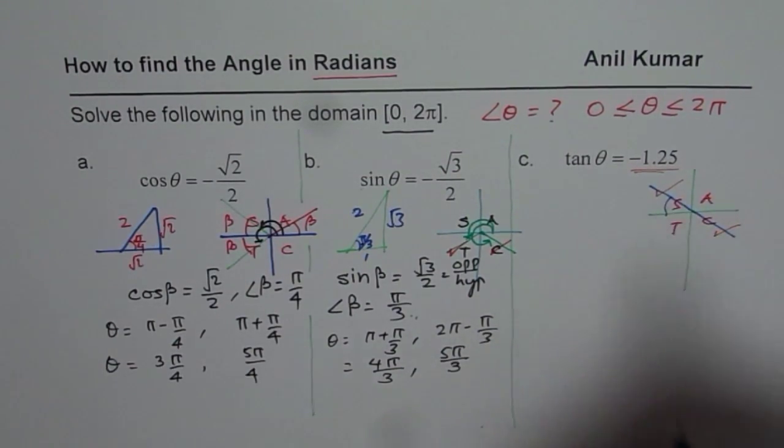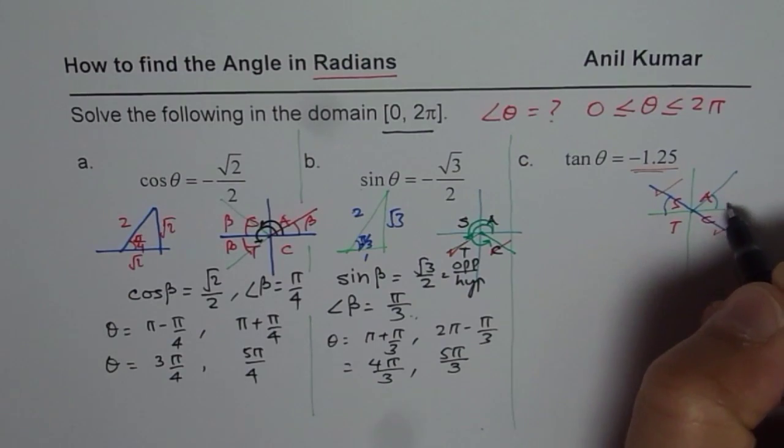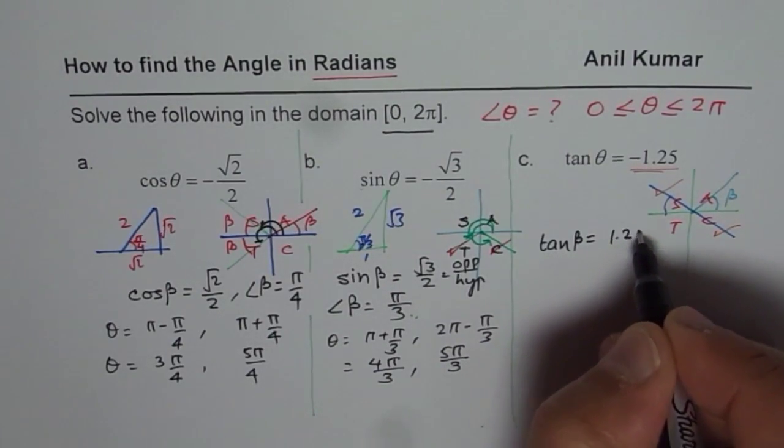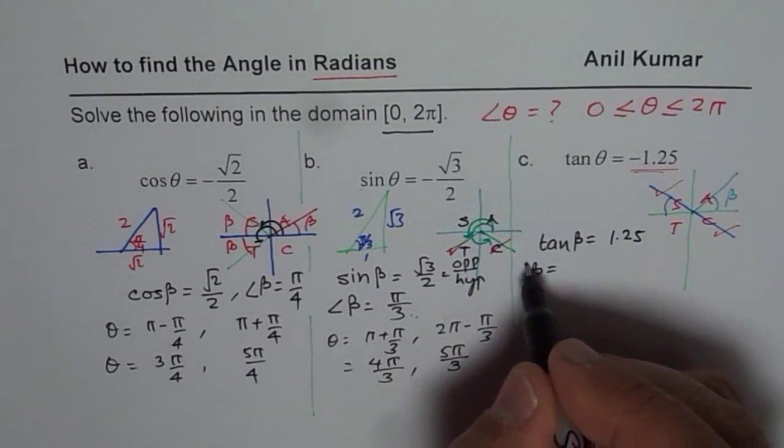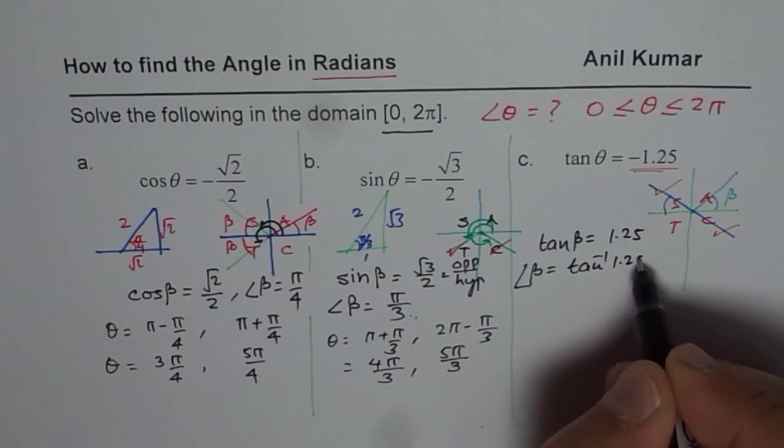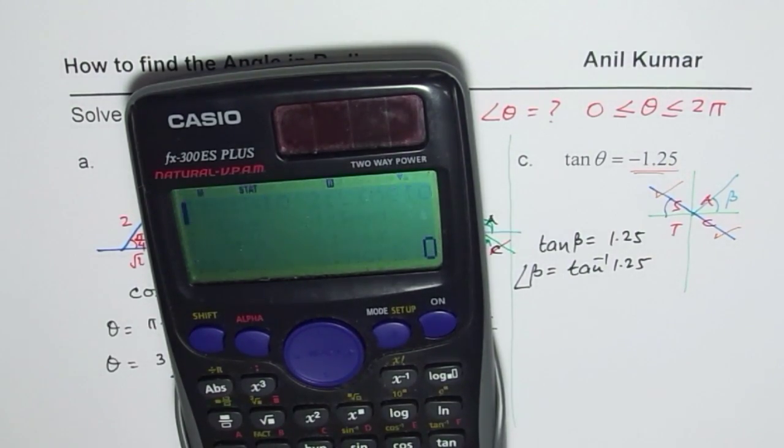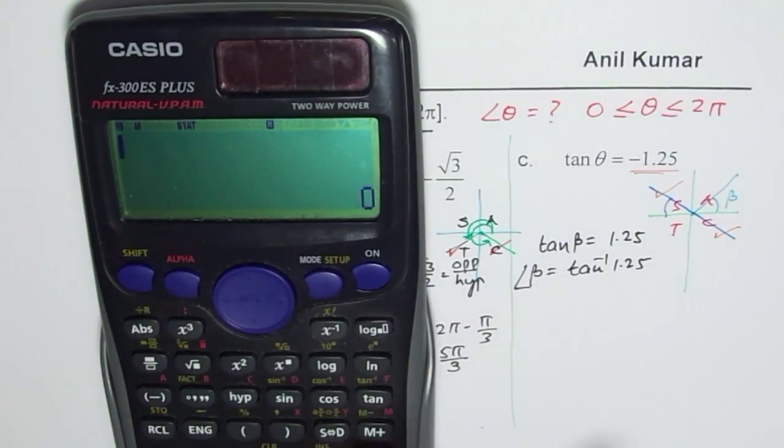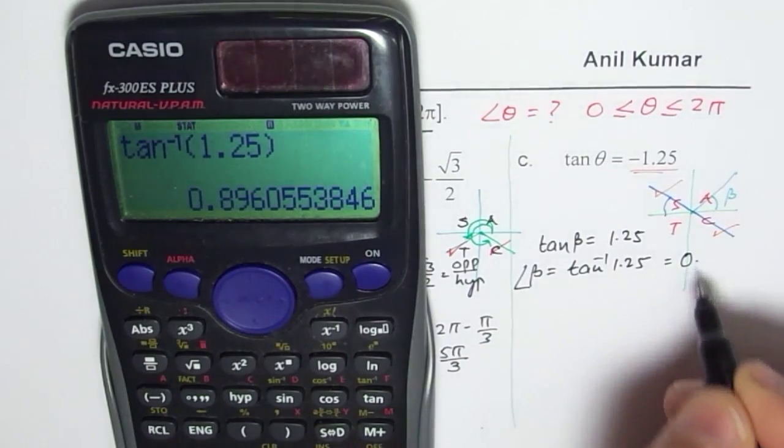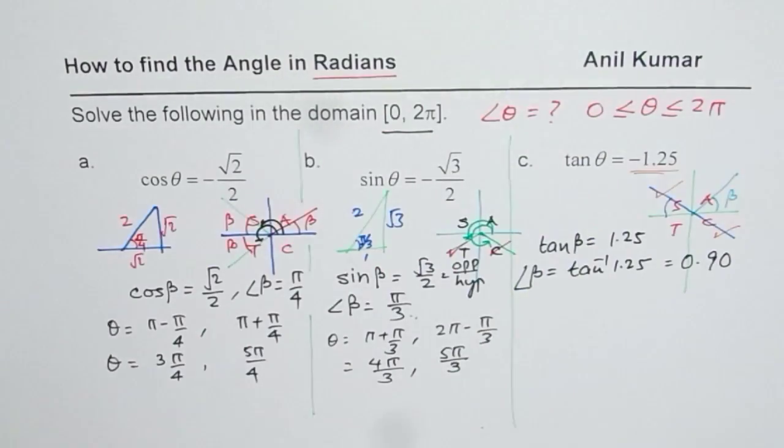It is a good idea to find the acute angle. Let's say the acute angle is β. We will first solve for tan β = 1.25. Acute angle will always give us positive value. So it will be tan inverse of 1.25. Use calculator, put it in mode which is radians. Shift tan inverse 1.25 equals to, we get one angle which is 0.90. So that is the acute angle.